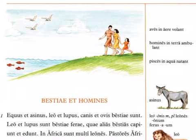In pictura sunt homines — in the picture there are people — vir et femina et puella, a man and a woman and a girl. Sunt aves in caelo, there are birds in the sky. Sunt pisces in aqua, and there are fish in the water.